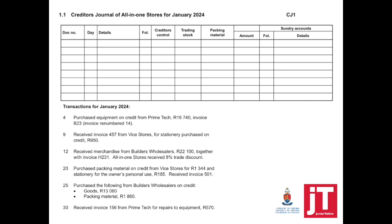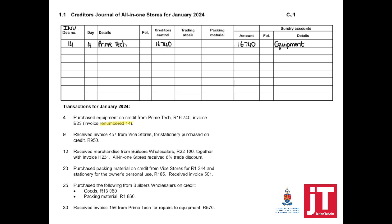When we show this transaction in our journal, we start with the document number — it's renumbered. The only source document that will ever appear in a creditors journal is the original invoice, so I'm writing it once and then just writing the numbers. This transaction happened on day four. We purchased from Prime Tech for 16,740. We show it in creditors control — money owed to Prime Tech. For what reason? Equipment. There's no money column open for equipment, so it goes under sundry accounts.